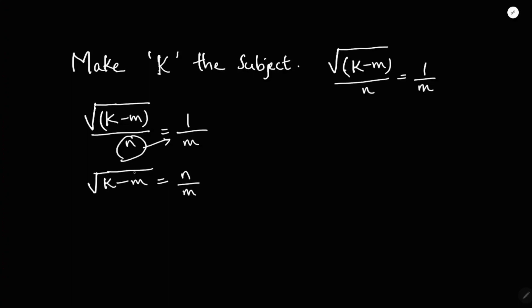Or otherwise, directly you can send root to the other side. It will become square. K minus m equals n by m whole square.